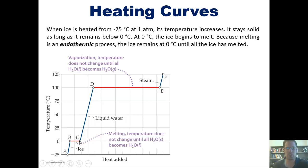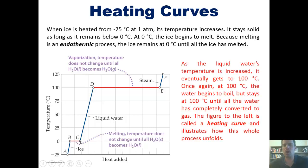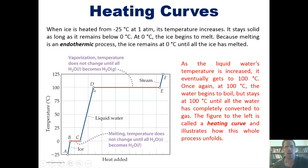Once that water is converted into a liquid, more heat pumped into the system will gradually raise the temperature of the now liquid water. As the liquid water's temperature increases, it eventually gets to 100 degrees Celsius. In between this entire time, it's liquid. At 100 degrees Celsius, much like we saw at zero degrees Celsius, we start to see a phase change.